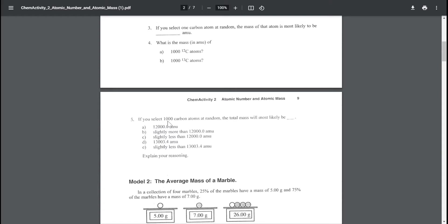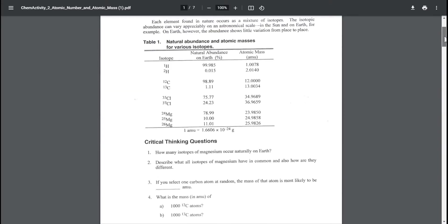It says here if I select 1000 carbon atoms completely at random, what will the total mass likely be? Let's go back to what I just told you. Almost 99% of all carbon is carbon-12, and only 1% is carbon-13.